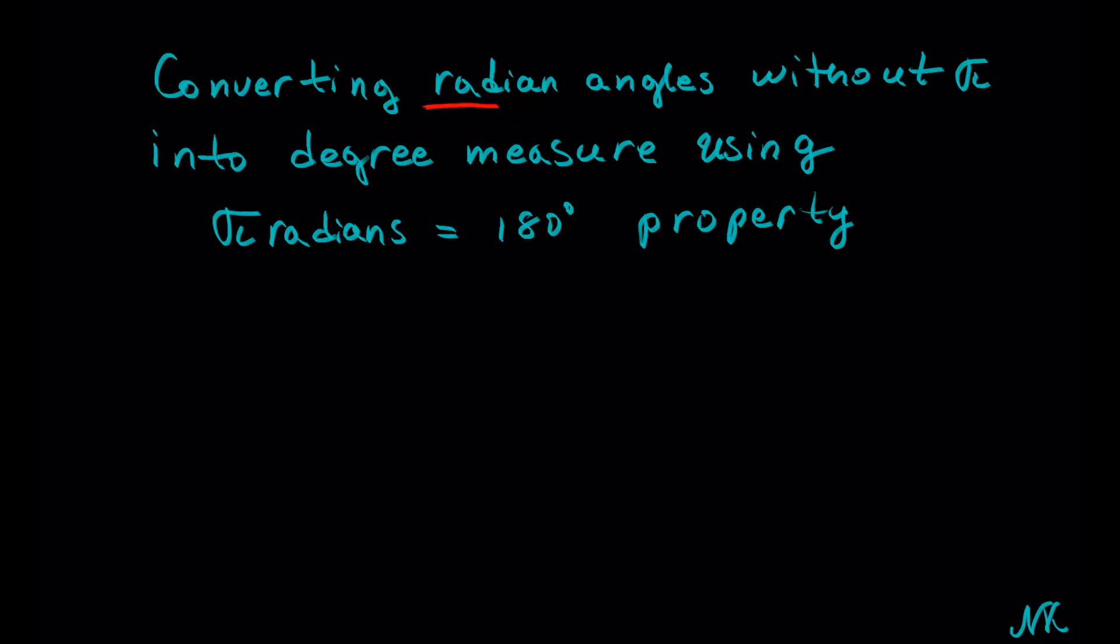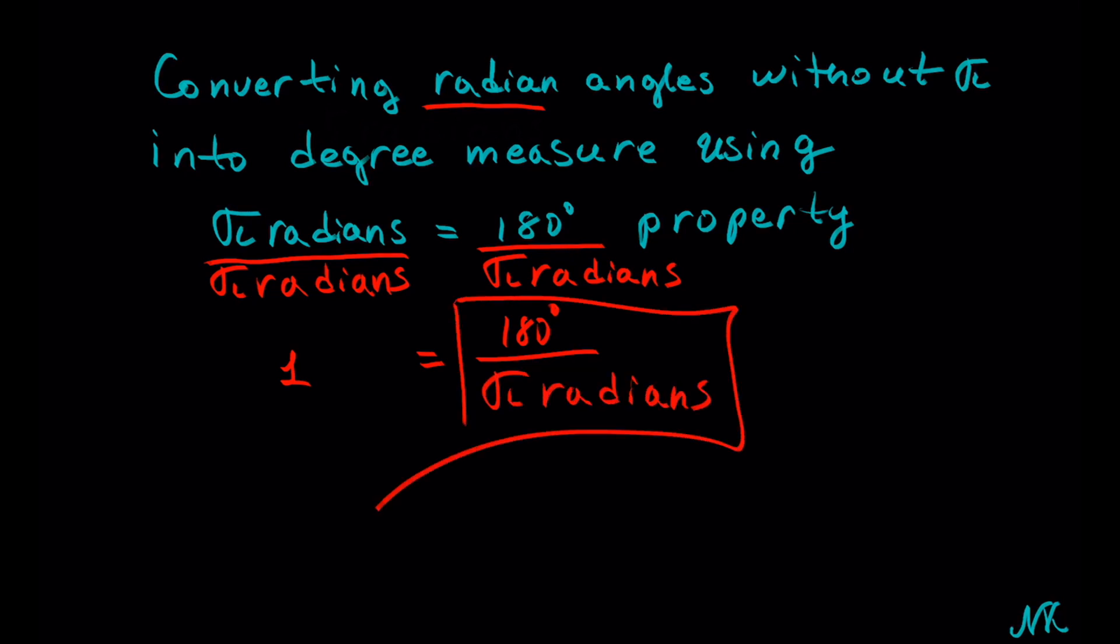Since we need to convert out of radian measure, we want to set up this ratio so that radians are in the denominator. Let's divide this side by pi radians. Whatever you do to one side, we have to do the same thing to the other side. And we get something divided by itself, we get 1 equals to 180 degrees over pi radians. And this is the ratio we are going to use.